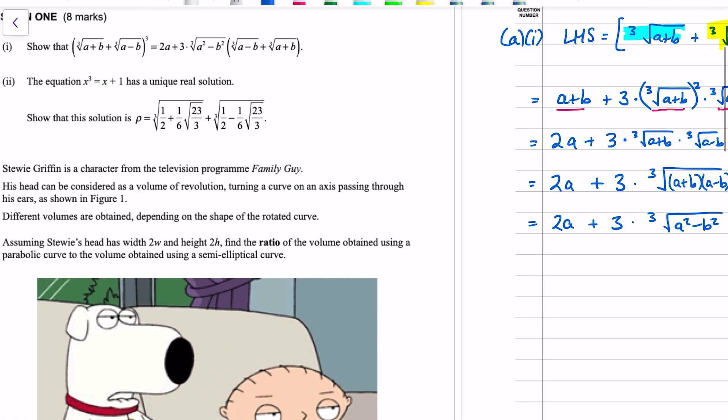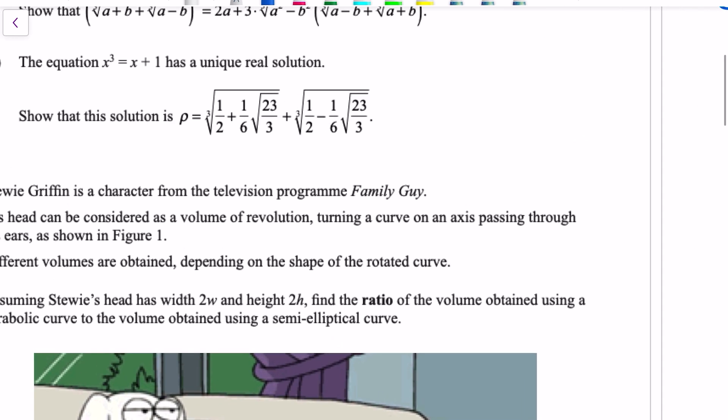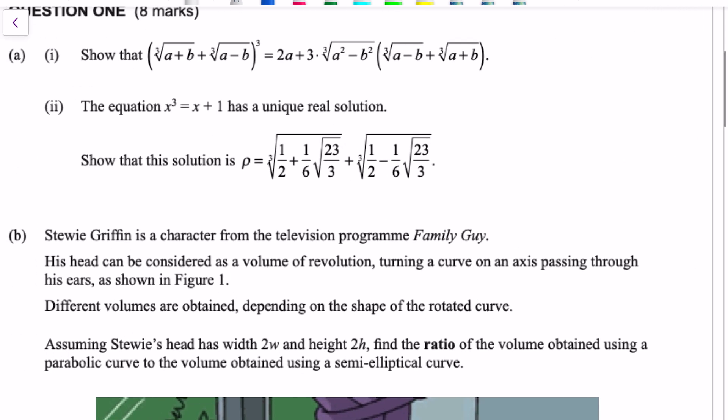Okay, how does that relate to the second part? Apparently, the equation x cubed equals x plus 1 has a unique real solution, which is this giant monstrosity. Now, a cubic has three solutions. They're not always going to be all real. In this case, this cubic here has real coefficients, meaning that if there are complex solutions, they'll come in conjugate pairs. But, apparently, it's got a real solution, and it's quite a simple cubic, but it doesn't have a very simple solution.